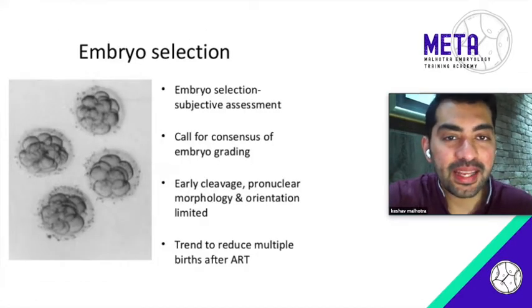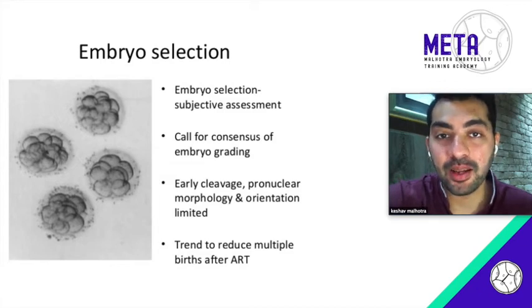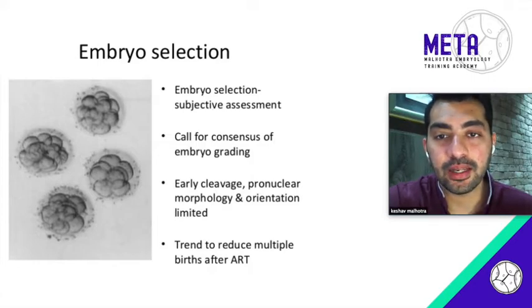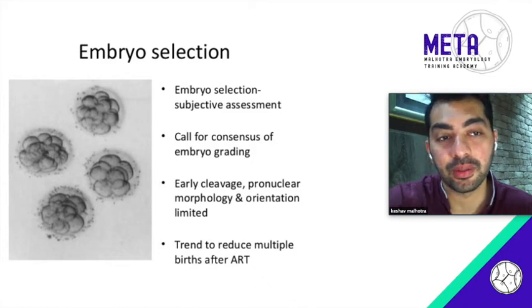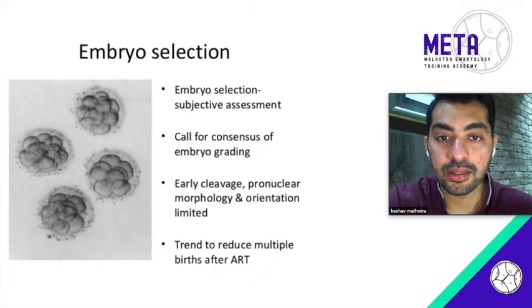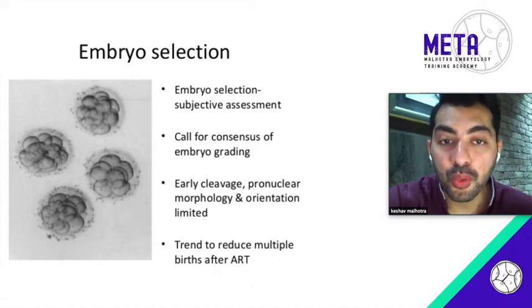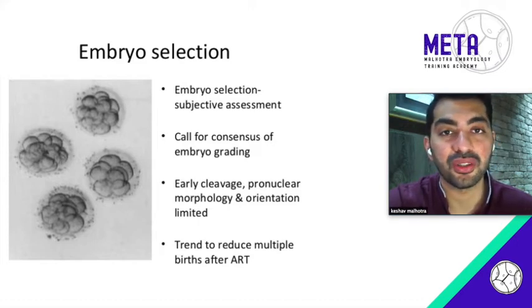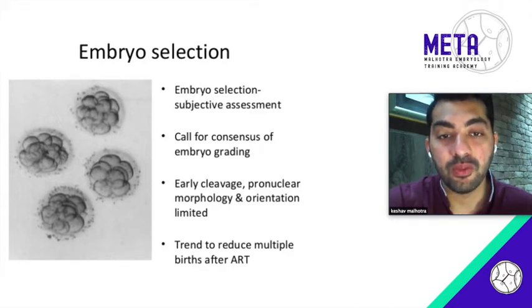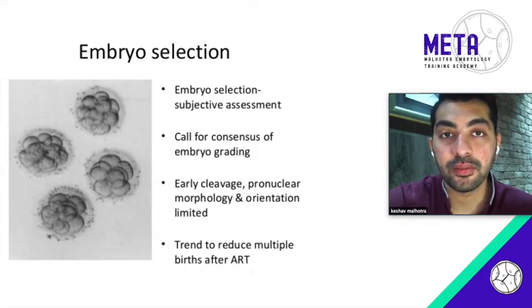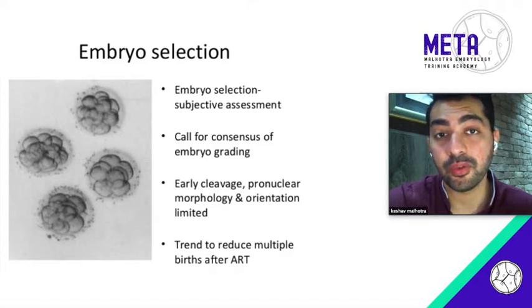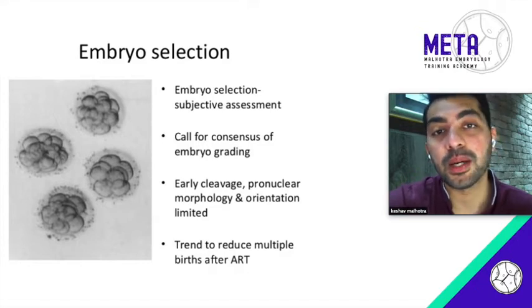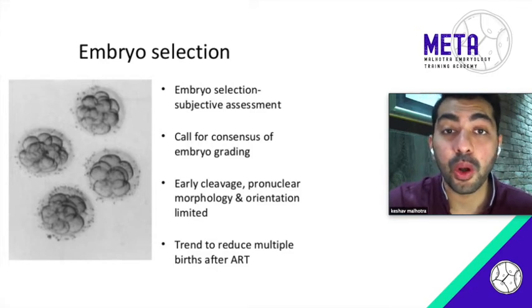Embryo selection is quite subjective — I might grade embryos differently from you, and even looking at the same embryo we may not be seeing the same things. There are markers available for improving selection, like checking for early cleavage, pronuclear morphology, and orientation of polar bodies. But when reducing multiple pregnancies, we must reduce the number of embryos transferred, and the only way to do that is by selecting the best quality ones so we don't compromise results.